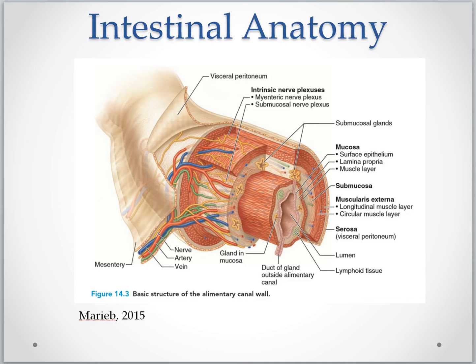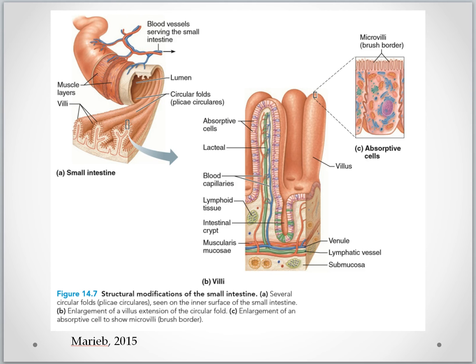The mucosa layer is typically on the front lines of Crohn's disease, and it's typically in the mucosa layer that Crohn's disease begins. I want to zoom in a bit closer here and show you some important structures to bear in mind as this presentation progresses. These structures are the villi,